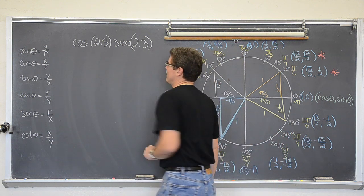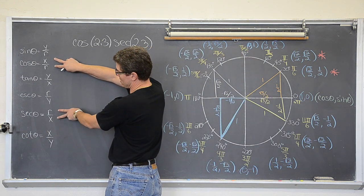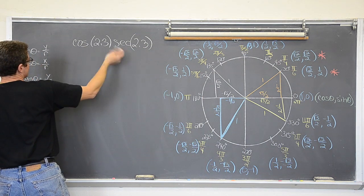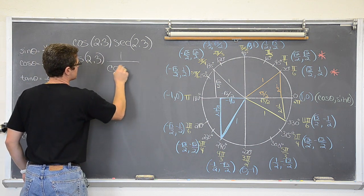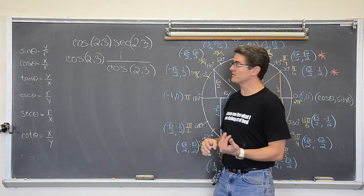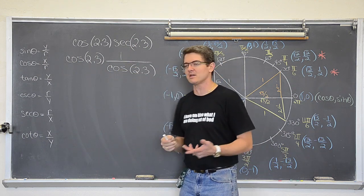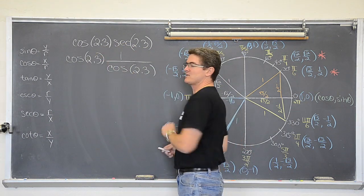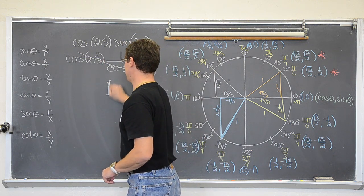The cosine of 2.3 and the secant of 2.3 are reciprocals of each other. Cosine is x over r, and secant is r over x. So this becomes the cosine of 2.3 times 1 over the cosine of 2.3. The secant of an angle equals 1 divided by the cosine of that same angle. And of course, the cosine of 2.3 divided by the cosine of 2.3 simply comes out to a value of 1.